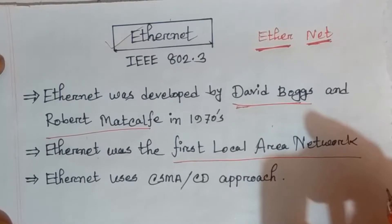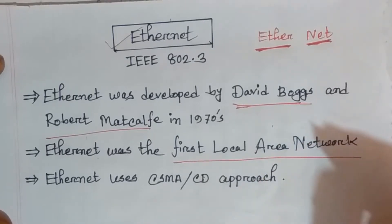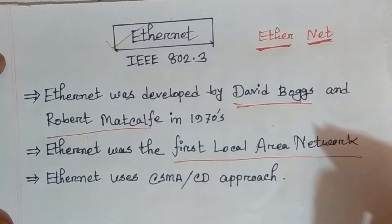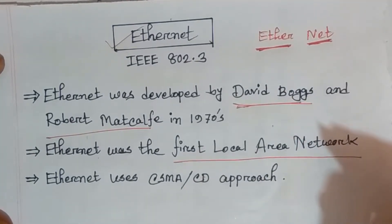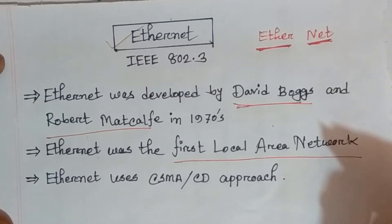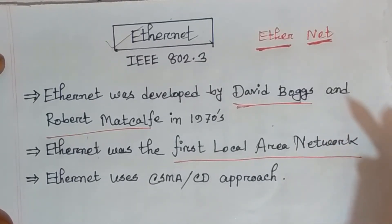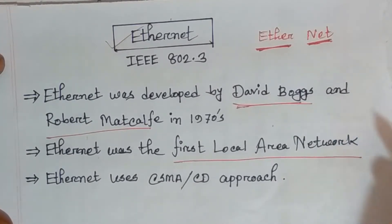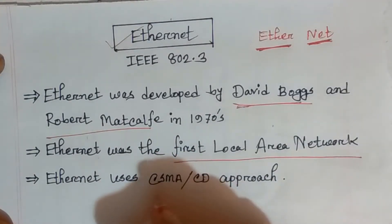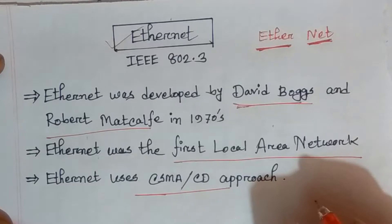We know that networks within a building, campus, or office are called local area networks. This local area network is called Ethernet. The Ethernet technology uses the CSMA/CD approach.